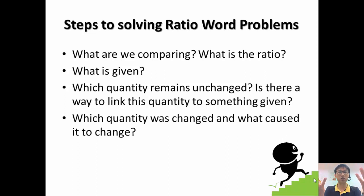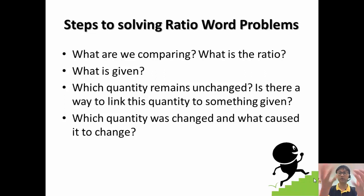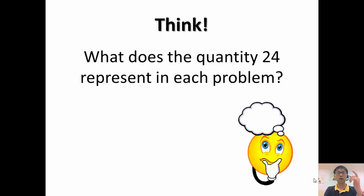Because usually for this kind of word problem, one quantity remains unchanged. So is there a way to link this quantity to what is given? The fourth thing to think about is: if something remains unchanged, something else must change. So what quantity changed and what caused it to change? Is it because something was received, given away, or exchanged? As we go through the three questions, think about what the quantity 24 represents in each problem, because that helps you solve it.